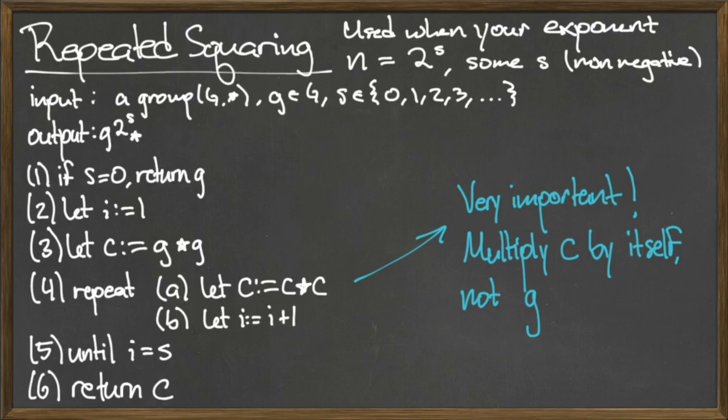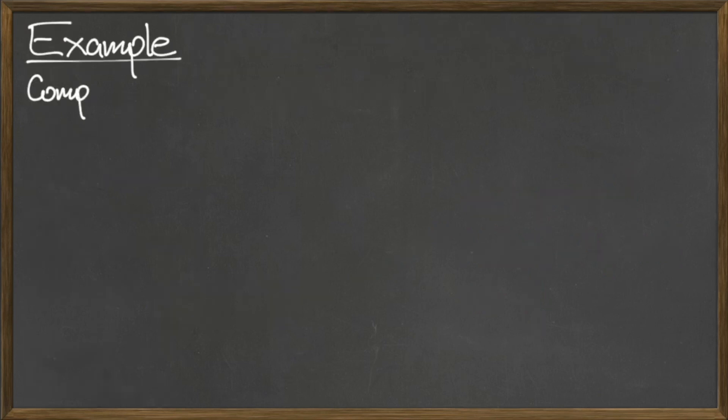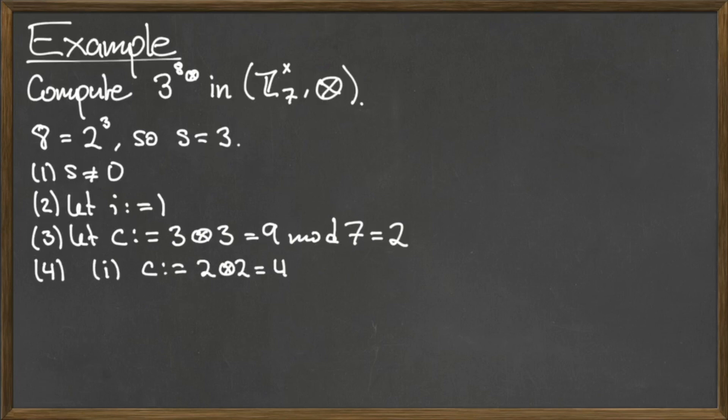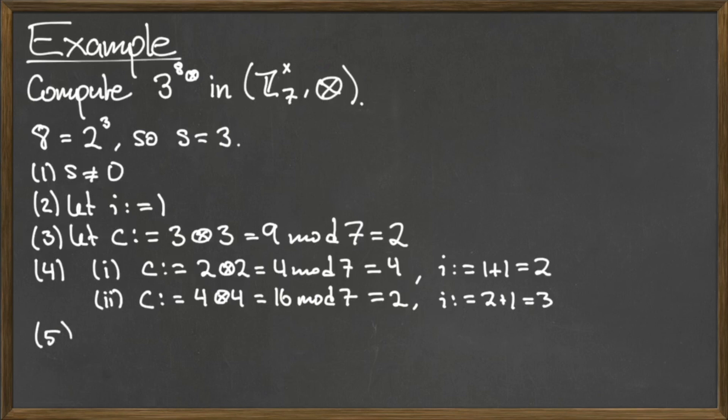To illustrate repeated squaring, let's compute 3 to the 8 star in the multiplicative group Z mod 7, under the binary operation circle times. Our group element little g in this case is 3, and our exponent n is equal to 8. However, we can express 8 as 2 to the third power, so our non-negative integer s for this example is s equals 3.